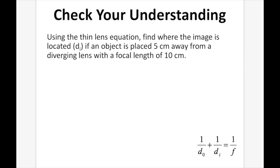Check your understanding. Using the thin lens equation, find where the image is located (DI) if an object is placed 5 cm away from a diverging lens with a focal length of 10 cm. DI is our question. DO is always positive and equals 5 cm. It's a diverging lens, therefore the focal length is going to be negative 10. Pause the video and answer this question.